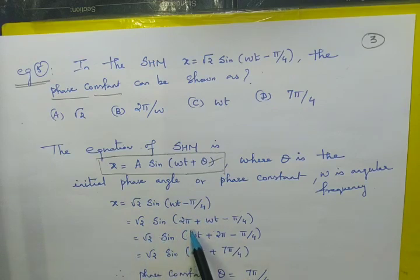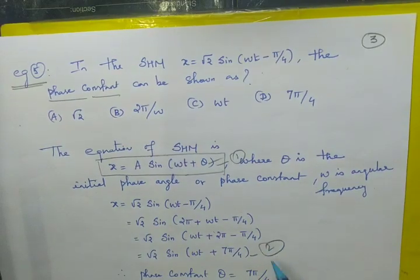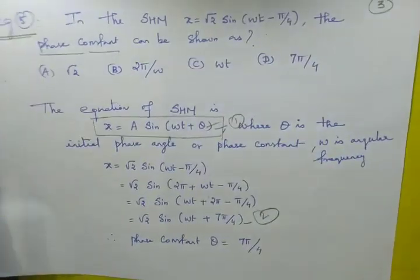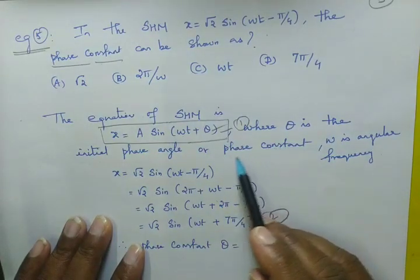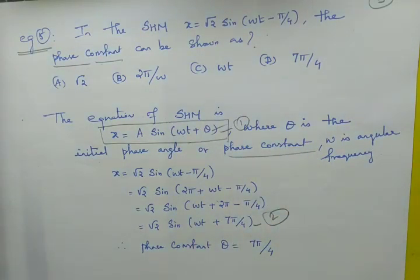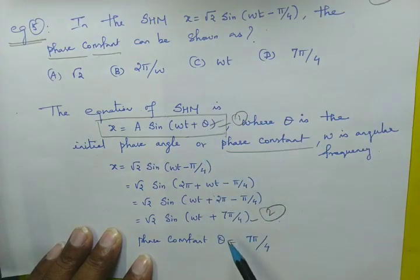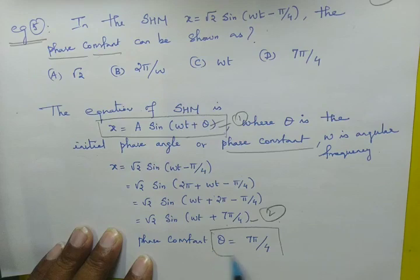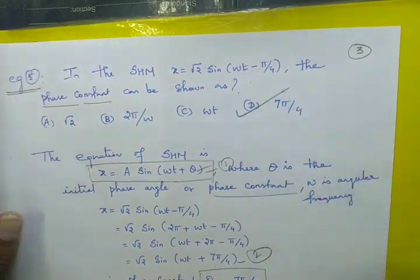The given equation is x equal to root 2 sin of omega t minus pi by 4. Since sin is periodic, we can write root 2 sin of 2 pi plus omega t minus pi by 4, which rearranges to omega t plus 2 pi minus pi by 4, giving omega t plus 7 pi by 4. By comparing with the standard form, the phase constant theta equals 7 pi by 4. Therefore, 7 pi by 4 is the right answer.